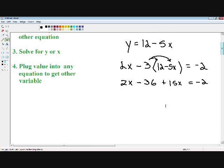Right now I'm just going to combine my like terms. My 2x and my 15x make 17x. I'm going to add 36 to both sides, negative 2 plus 36 equals 34. Now we divide both sides by 17 and we're left with x equals 2.